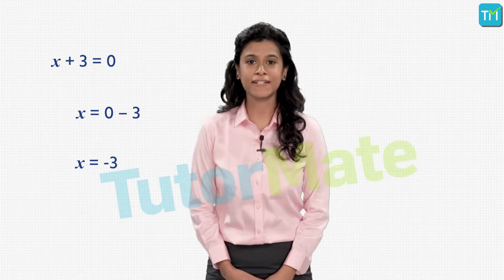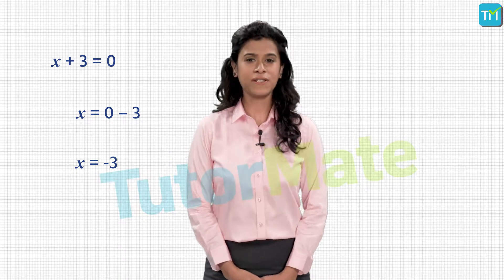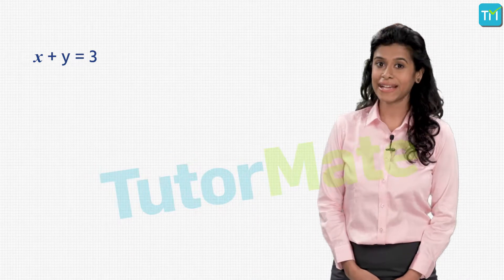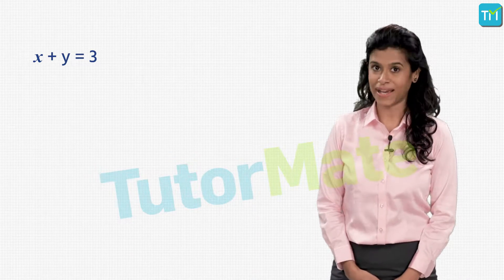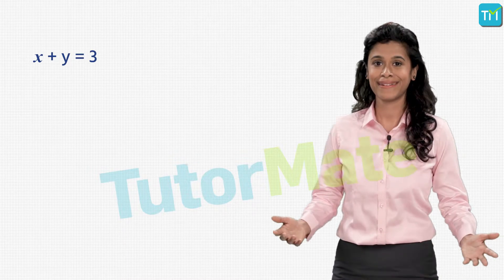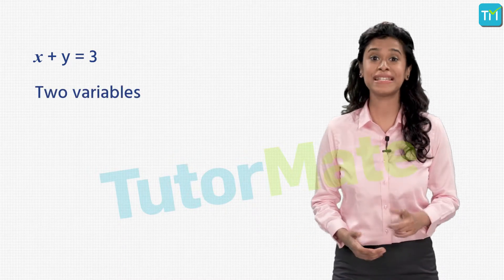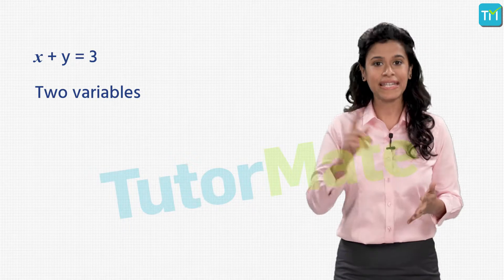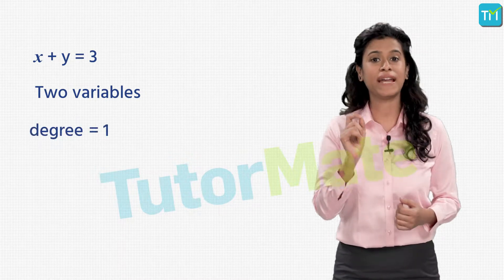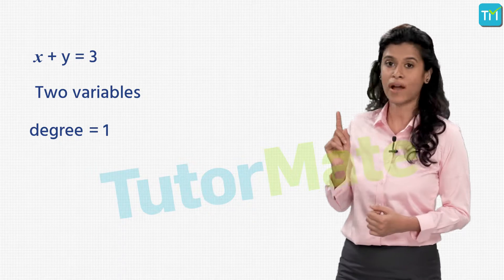Fairly simple right? Now let's make it a little more interesting. What if I add another variable, say y, to the same equation? Look at this: x plus y is equal to 3. Here we have two variables in the same equation, and in this case the maximum degree of any variable is 1.